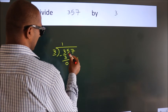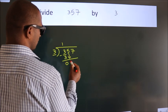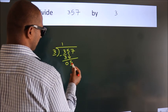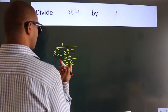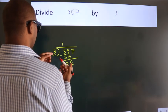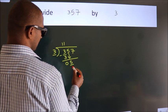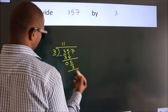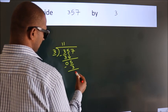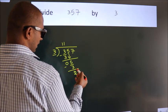After this, bring down the beside number. So, 5 down. A number close to 5 in 3 table is 3 once, 3. Now, we subtract. We get 2.